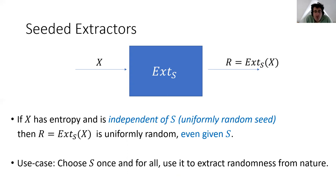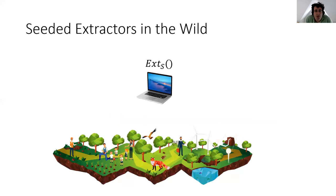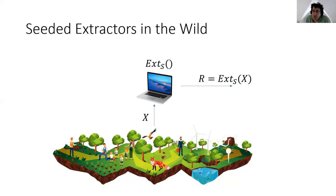The use case we envision is that we would choose the seed s once and for all and hard-code it into various components, then use it to extract randomness from various samples that come from nature. We have the seed s, which is public and hard-coded in all kinds of systems and devices. Whenever we get some sample x from nature, we feed it into this extractor and use the output r as the derived randomness for applications like cryptography.